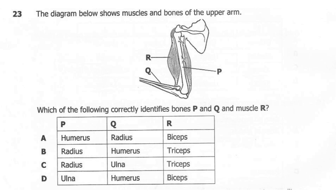Question 23. The diagram below shows muscles and bones of the upper arm. Which of the following correctly identifies bones P and Q and muscle R? A: P humerus, Q radius, R biceps. B: P radius, Q humerus, R triceps. C: P radius, Q ulna, R triceps. D: P ulna, Q humerus, R triceps. The correct answer here is A. Bone P is the humerus and bone Q is the radius, while muscle R is the biceps.